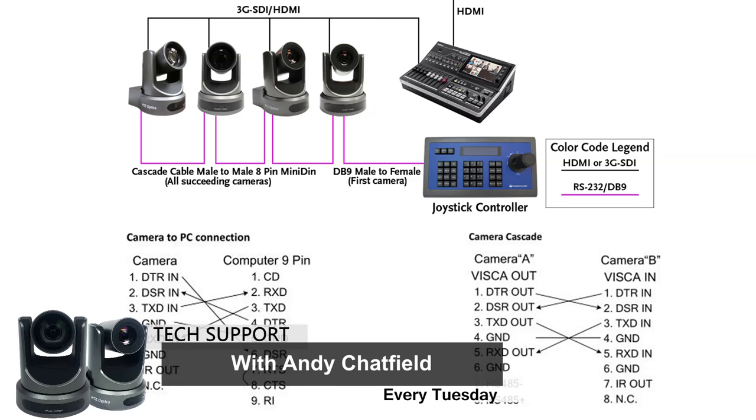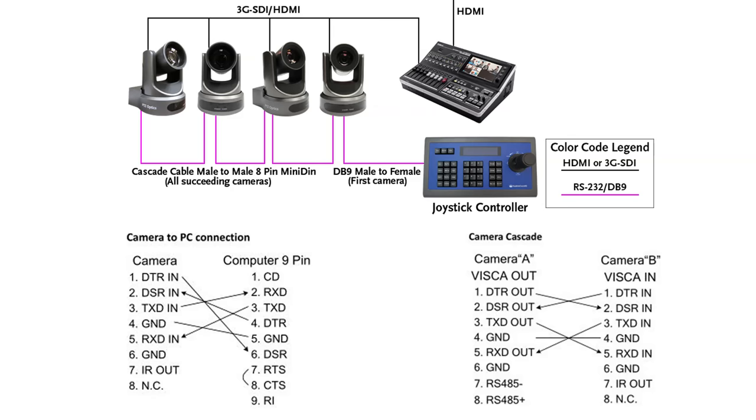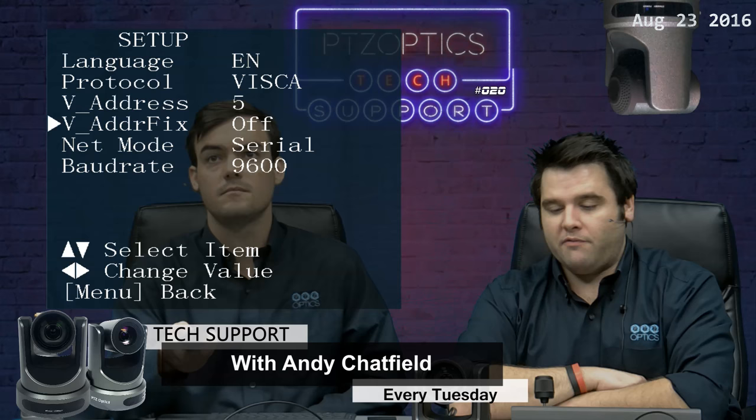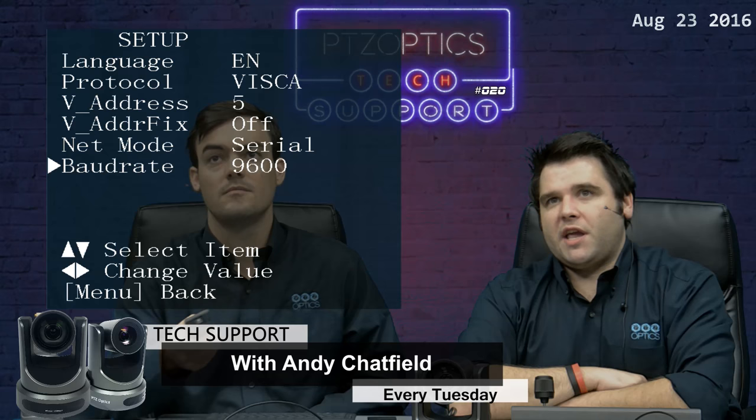Last question: baud rates. Basically, a baud rate takes into account the amount of information flowing down the cable as well as the cable length. A lower baud rate means you can go further, but less information travels. A higher baud rate gives you shorter length but more information. We always recommend staying at 9,600 baud — that's the default setting. You shouldn't run into any issues with the cameras as long as you're running at 9,600. If you start going down to 4,800 or 2,400, certain commands might be missed.